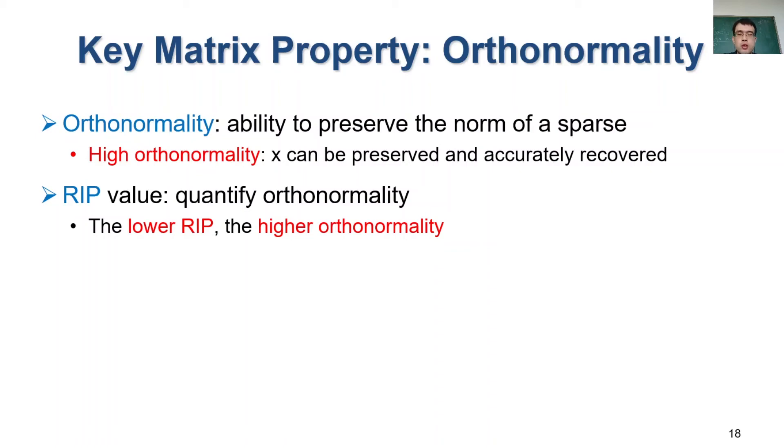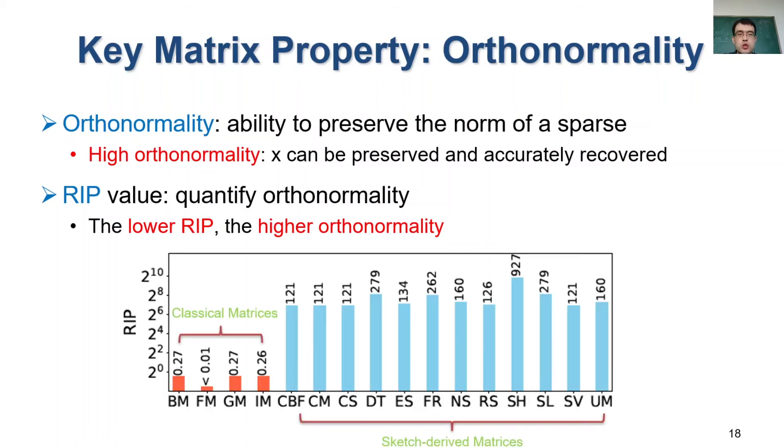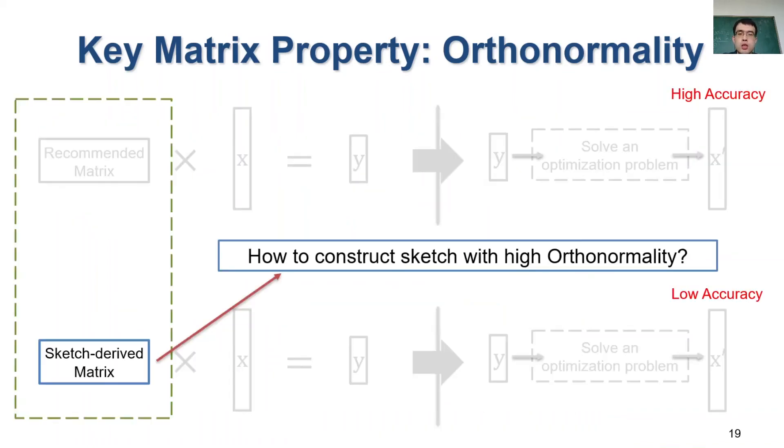So we measure the RIP for the recommended sensing matrix and our constructed matrix. We observe that the recommended matrix in classical compressive sensing has RIP values below 0.3, which means that they are highly orthonormal. However, all RIP values of our constructed matrix are above 100. So our next study is to design sketch algorithms with highly orthonormal matrices such that we can use compressive sensing to recover highly accurate flow statistics.